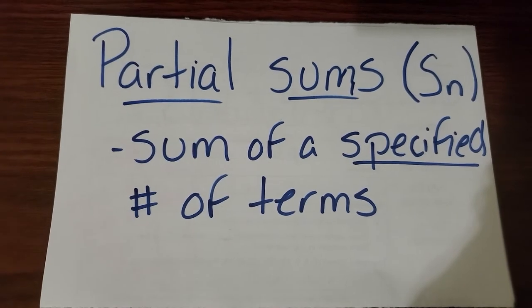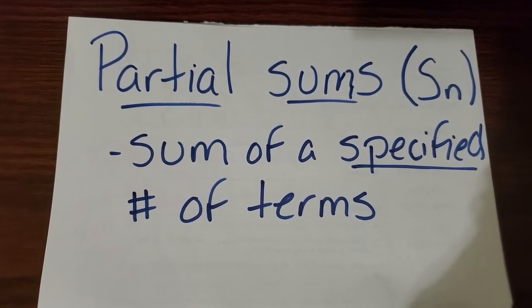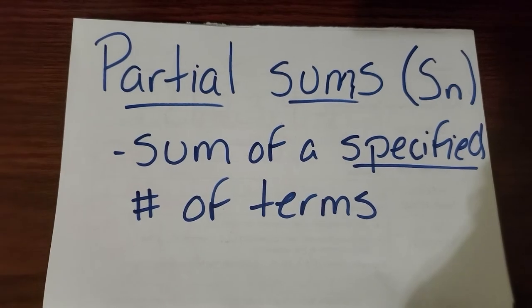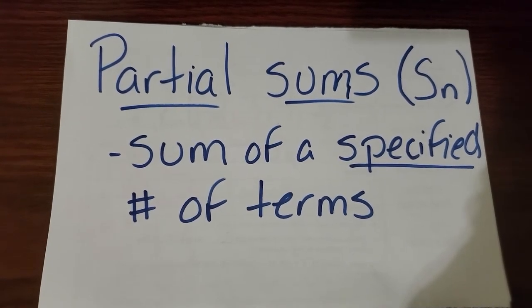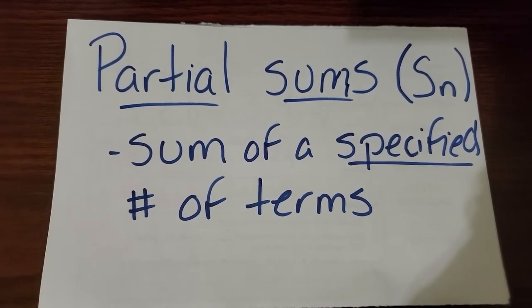Partial sums are the sum of a specified number of terms. So you would have to know how many terms you're adding up and that would be a partial sum.